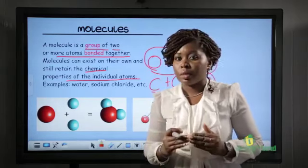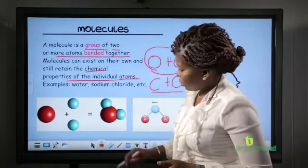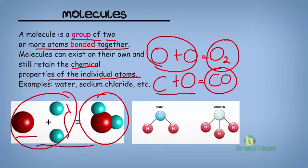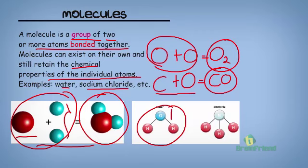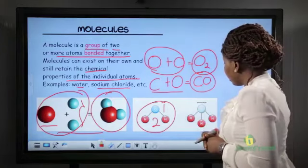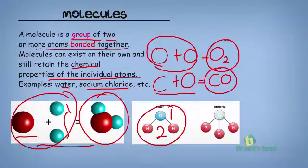We also said that more than two atoms can bond to give a molecule. For example, this diagram here shows us two elements of the same atom — that is why they have the same color — and another atom. The three of them can bond to give us this molecule. Examples of molecules are water and sodium chloride. Water forms a molecule with three atoms: one atom of oxygen and two atoms of hydrogen. We also have ammonia, which contains four atoms: one atom of nitrogen and three atoms of hydrogen.